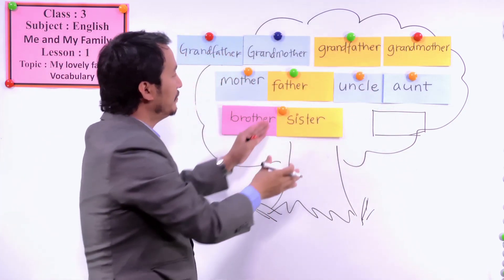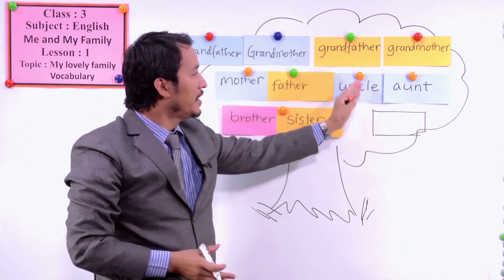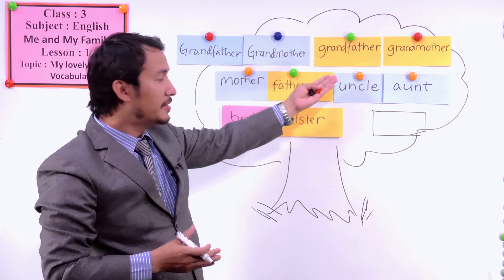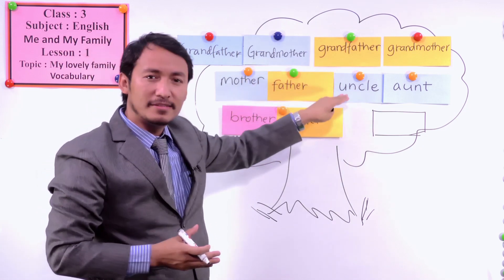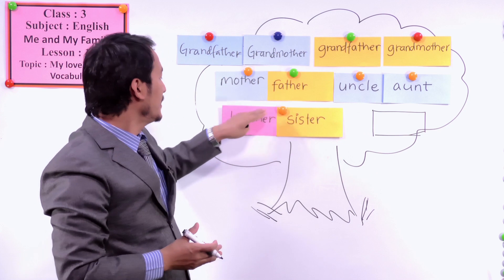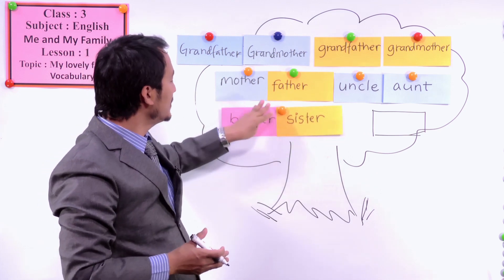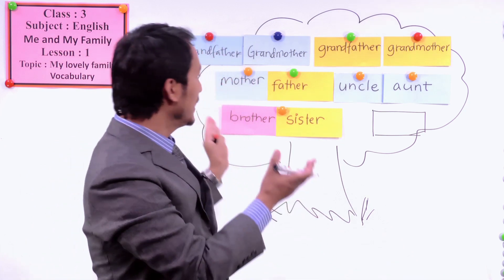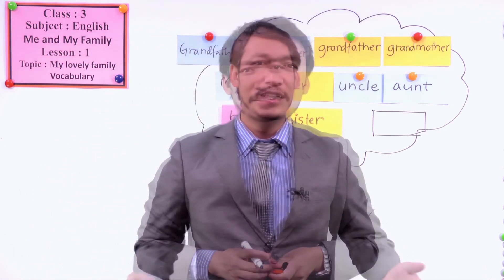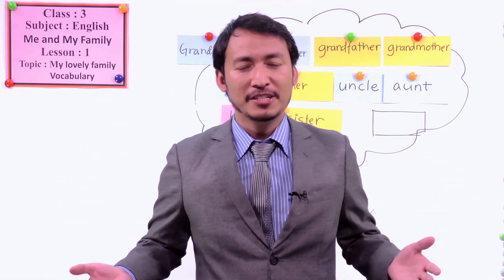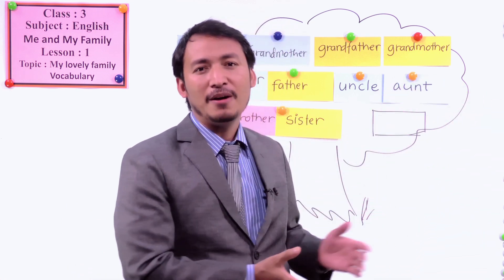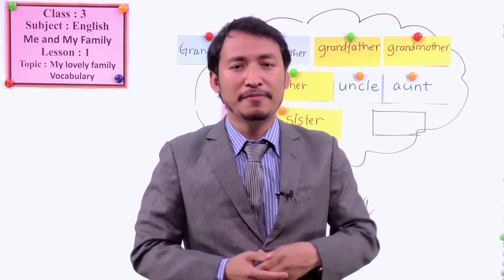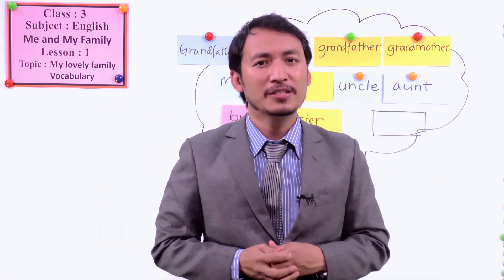Now you are following the father's side. You have uncle — the son of your grandfather, another son, the brother of your father. And then you have your brothers and sisters from the same mother and father. This is how you can make a family tree. We have talked about our family members and the whole family structure.